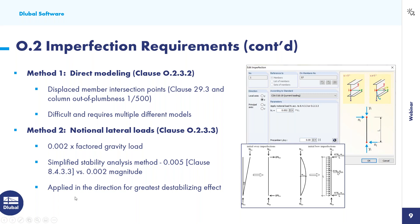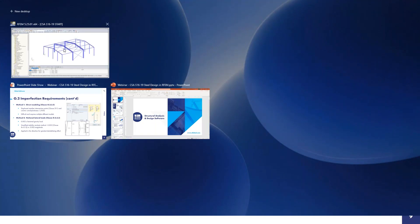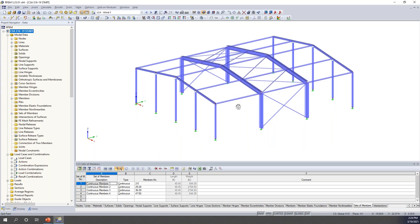These notional loads should be applied in the direction for the greatest destabilizing effect — notional loads in X with wind in X, notional loads in Y with wind in Y. Over on the right we have a dialog box in RFEM for what we call imperfections. These imperfections allow us to consider the lateral load causing member out-of-plumbness, and also optionally a pre-camber or member out-of-straightness. The code does not address member out-of-straightness, but it is possible within this dialog box. Now let's jump to our RFEM example to apply these notional loads or imperfections directly to the structure.